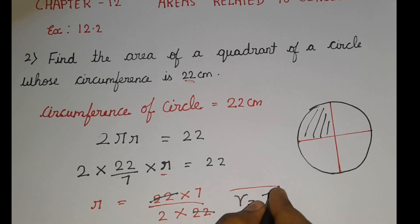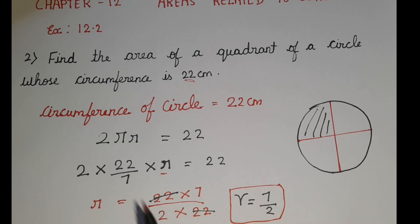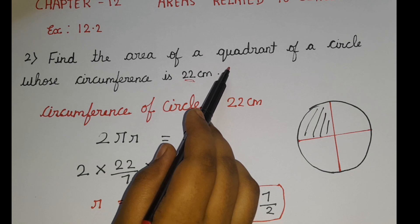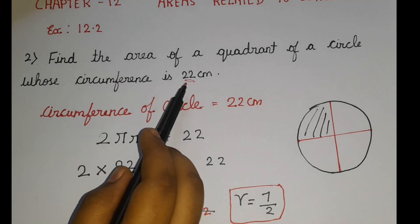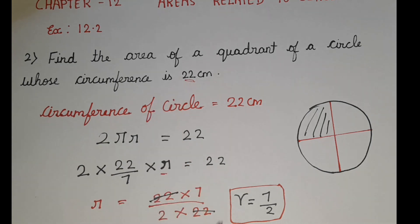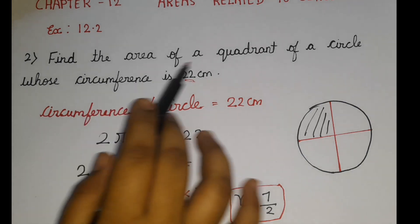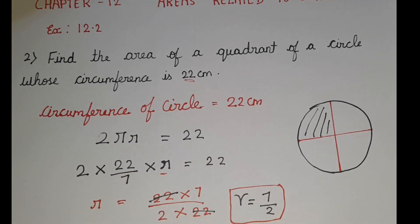So we can apply the area of quadrant formula and solve it. Why didn't I apply the formula at first? Because I didn't know the radius. But I used the clue mentioned in the question and found the radius.